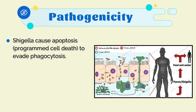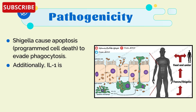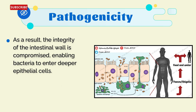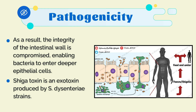Shigella causes apoptosis — programmed cell death — to evade phagocytosis. Additionally, interleukin-1 is released during this process, which attracts polymorphonuclear leukocytes to the diseased tissues. As a result, the integrity of the intestinal wall is compromised, enabling bacteria to enter deeper epithelial cells.